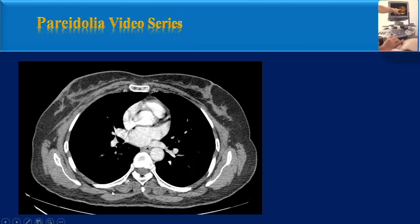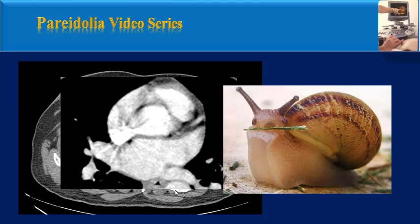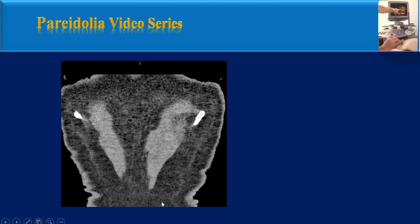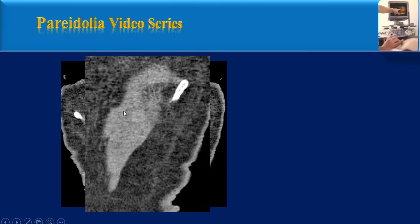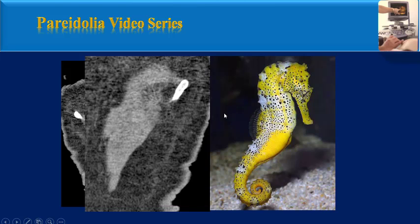This axial chest CT — pay attention to this part of the image which obviously looks like a snail. Another coronal CT image from the chest wall — pay attention to this part of the image, which looks like a sea horse.